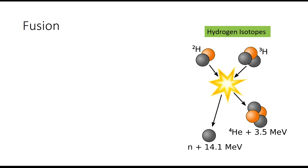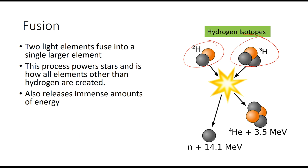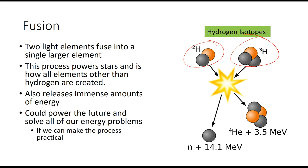The next type of nuclear power — which we don't currently use for electricity — is fusion. Fusion takes small atoms like hydrogen; two isotopes of hydrogen are fused together to create something like helium. In the process of fusion, much like fission, we release lots and lots of energy from a small amount of matter. Fusion occurs naturally in stars — our sun is a giant thermonuclear reaction fusing mostly hydrogen into helium.